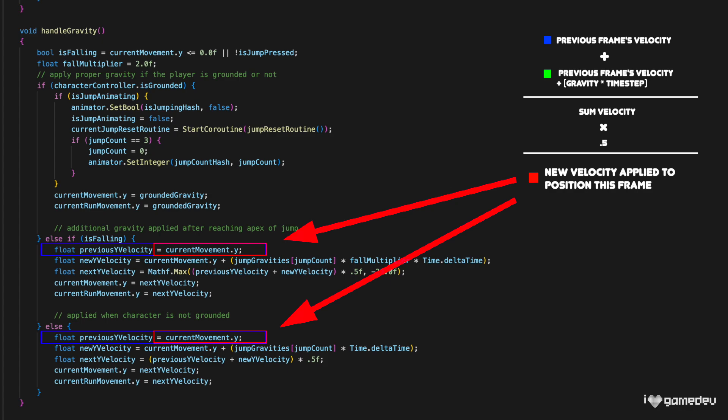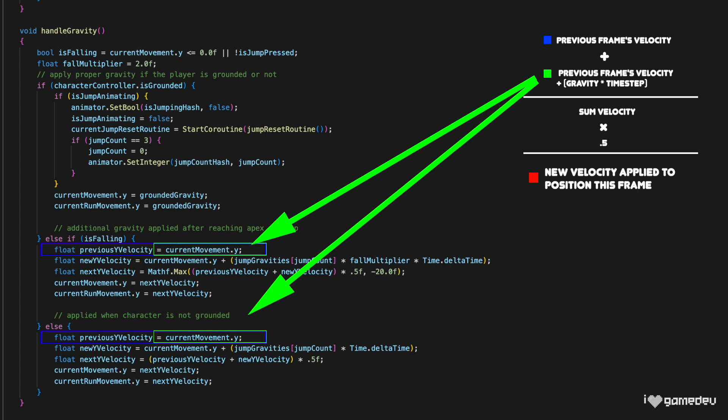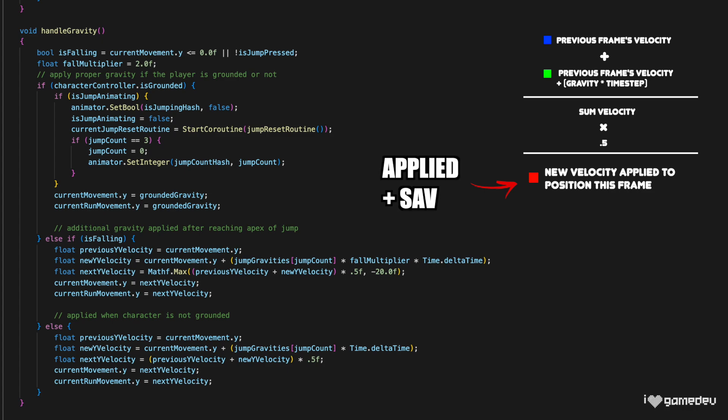This is wrong. What we should be doing is applying the average velocity like we currently are to the character controller's position, but saving the calculated newYVelocity for the next frame. So to reiterate, we are saving the nextYVelocity, which is the average of the two velocities. And that's what's being used in the next frame's handleGravity method. But it's not supposed to be. The average is only supposed to be used in the actual movement. We're supposed to save the newYVelocity, which is the velocity that just adds gravity.